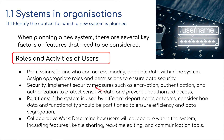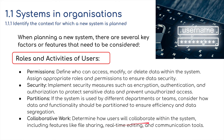In terms of security, we should implement measures such as encryption, authentication, and authorization to protect sensitive data and prevent unauthorized access. For partitions, if a system is used by different departments or teams, consider how data and functionality should be partitioned to ensure efficiency and data segregation. We can also look at collaborative work — features like file sharing such as Google Drive, real-time editing, and communication tools.